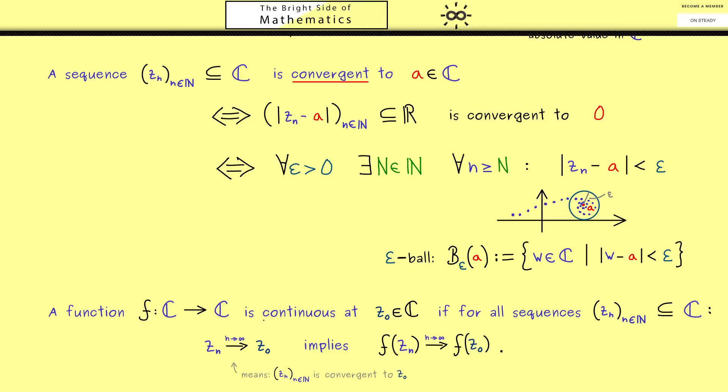You should remember continuous at a given point just means that convergence in the input implies convergence in the output. With this we have the definition of continuity for complex functions.